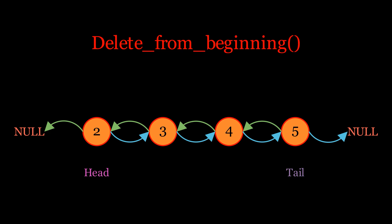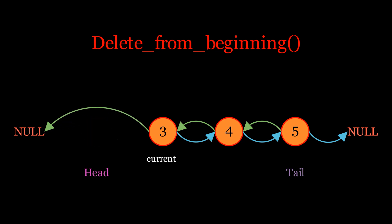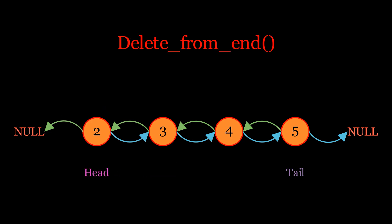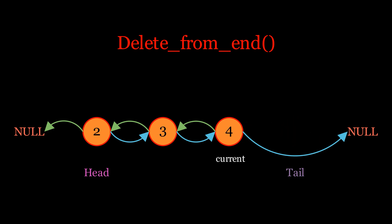To delete from the beginning of a doubly linked list, first get the next element of the current head node, update the previous pointer of that next element to null, then set the head pointer to point to that next element. To delete from the end, first get the previous element of the current tail node, update the next pointer of that element to null, then set the tail pointer to point to that previous element. Both these operations are constant time because they involve a fixed number of pointer updates regardless of list size.